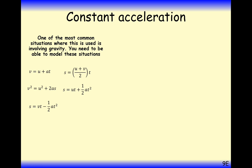We've still got our SUVAT formulas, and if A is gravity then we'll use 9.8. The letter we tend to use for gravity is G.